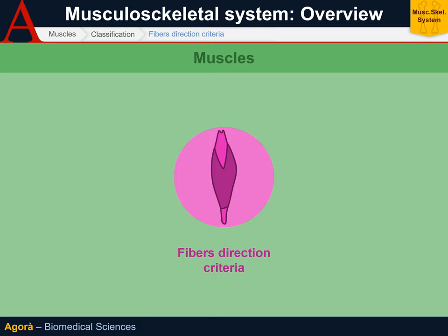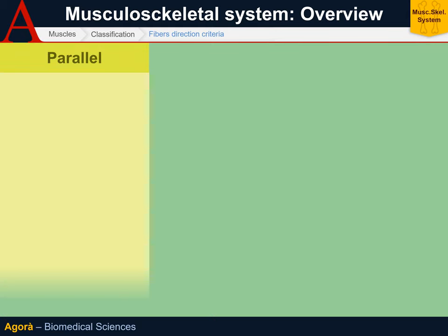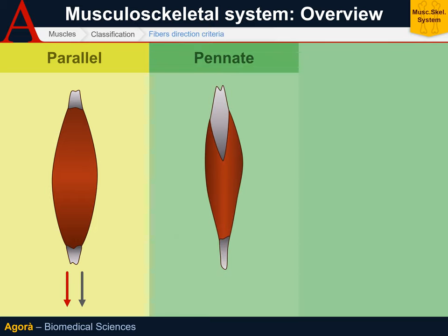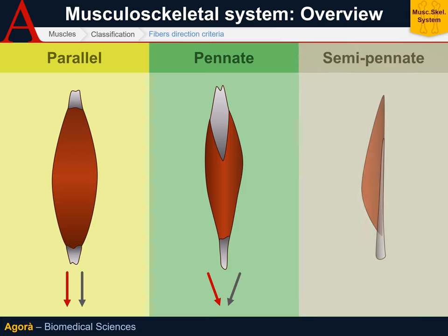The last classification criterion is the direction of the fibers. Parallel fiber muscles have all fibers running in the same direction. Pennate muscles have fibers oriented in two directions, inclined from each other by about 90 degrees. Semi-pennate muscles have fibers whose inclination is not along the major axis of the muscle.